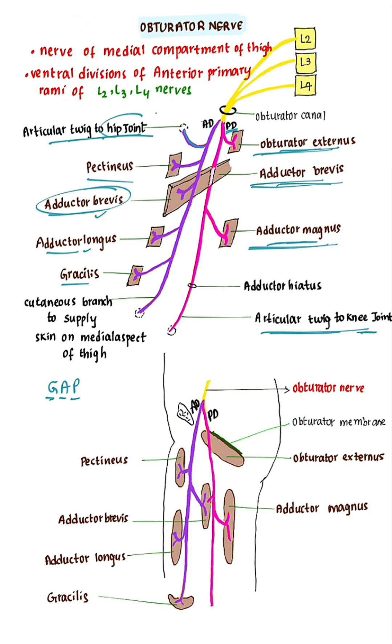As both the hip joint and the knee joint are supplied by the obturator nerve, in diseases of the hip joint, pain is often referred to the knee joint.